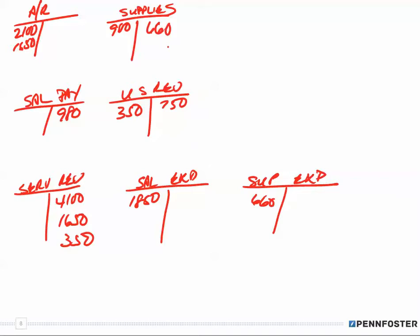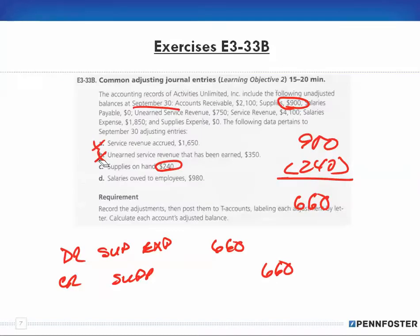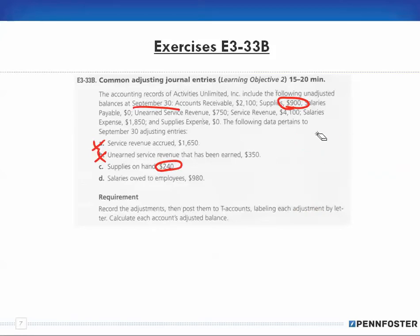A thought on balancing: a lot of students say their debits don't equal their credits when calculating balances. Notice that all I'm doing is transferring information. As long as I write the correct number — not 606 but 660 — and put it on the correct side, debit or credit, the only reason debits and credits would be off is incorrect math. Do the math several times to make sure it's right, and focus on writing the number in the correct spot.